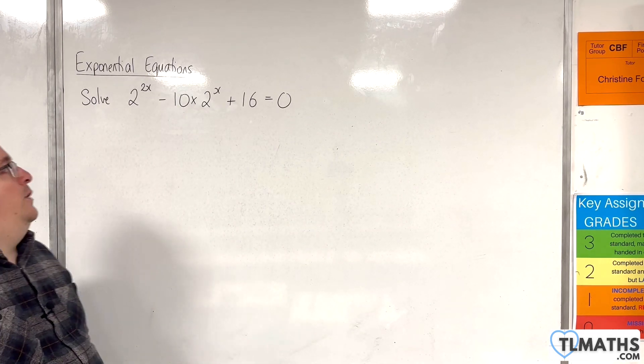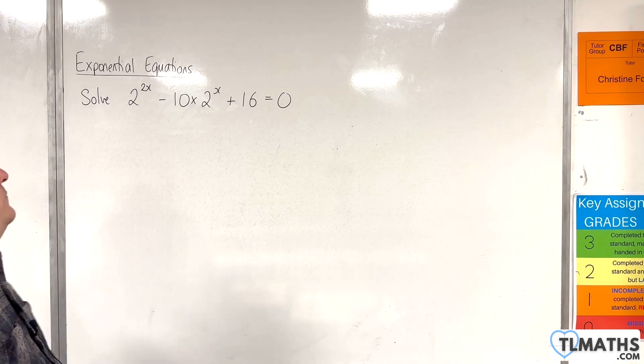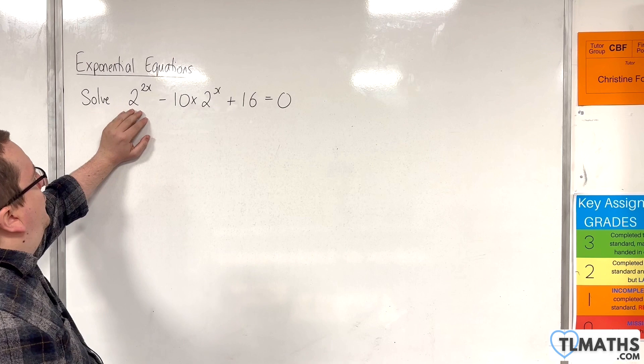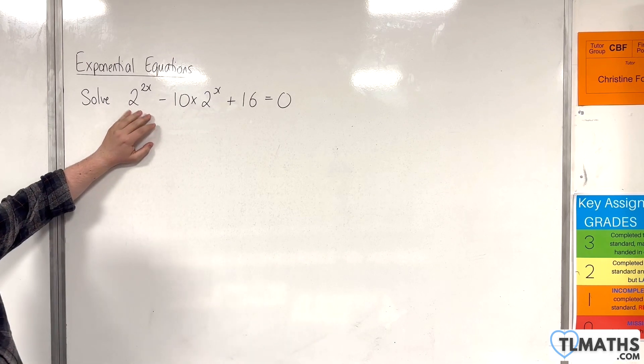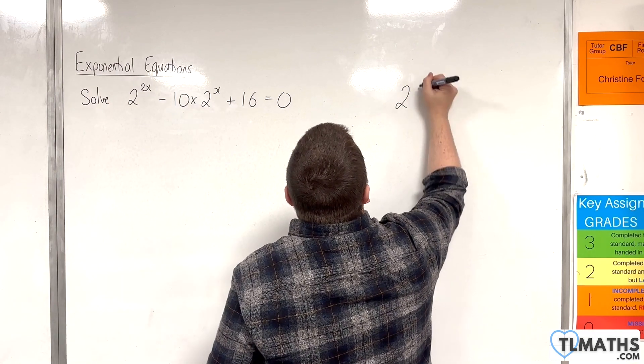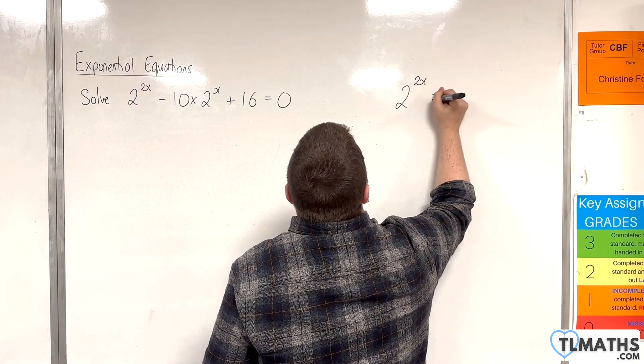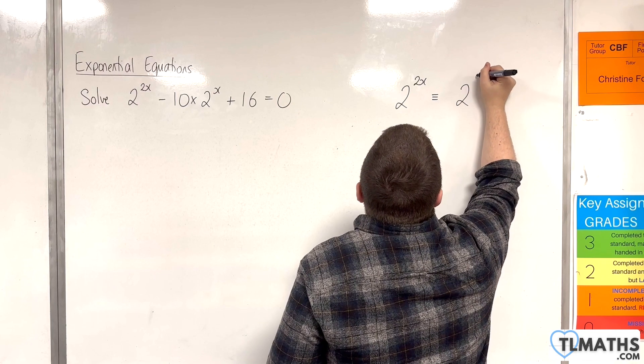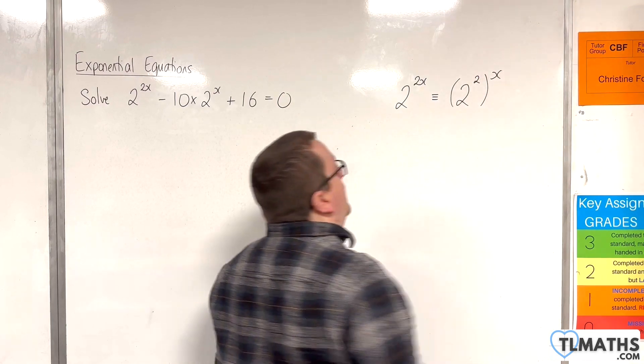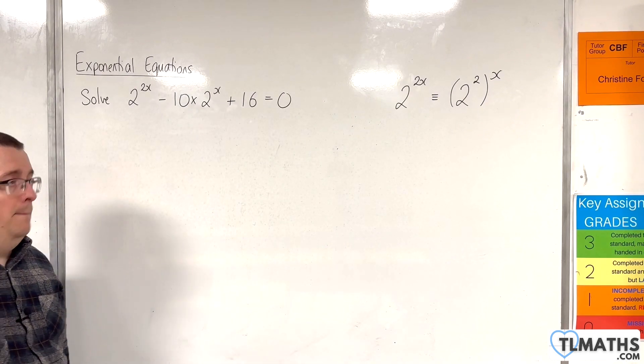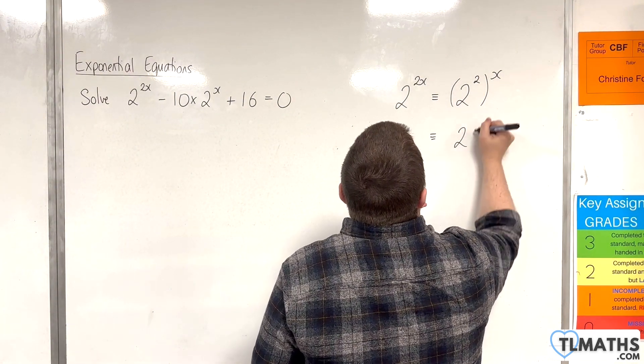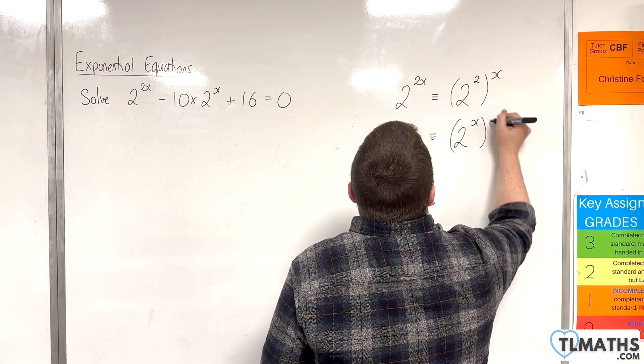How do we do that? How do we get used to that? Well, the first thing is to recognize what that 2 to the 2x actually is. 2 to the 2x can be written as 2 to the 2 to the power of x using our index laws, or you could write it as 2 to the x, all squared.